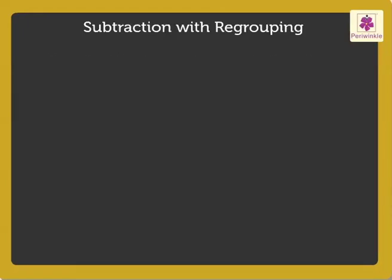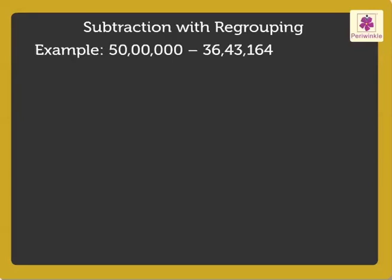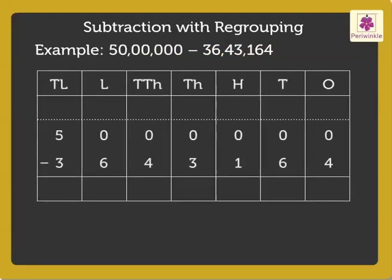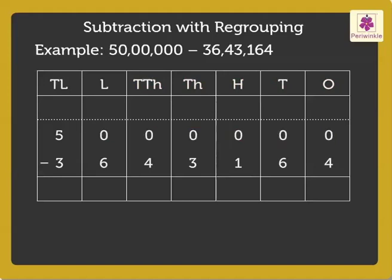Let us understand this with an example. Let us subtract 36,43,164 from 50 lakh. Write the numbers in the place value chart. We cannot subtract the digits in the lakhs, ten thousands, thousands, hundreds, tens and ones places as there are zeros in the minuend.